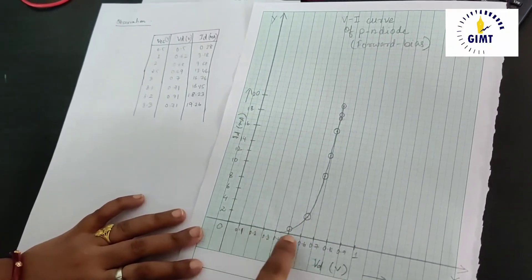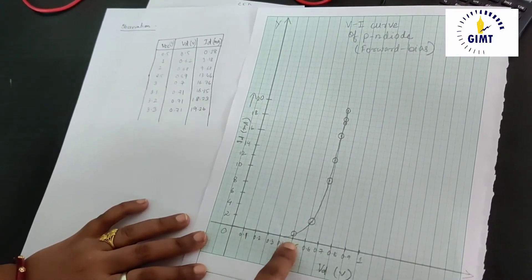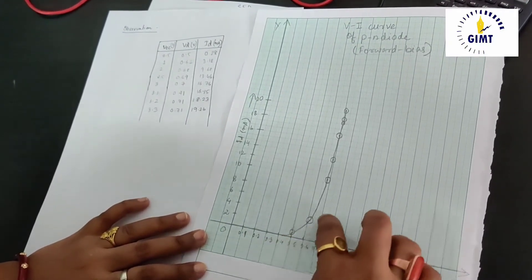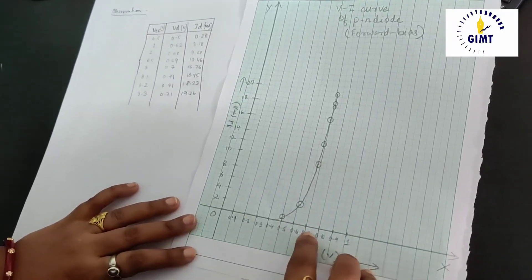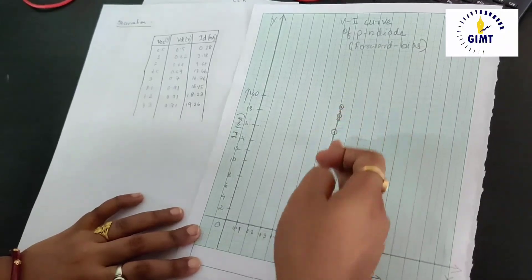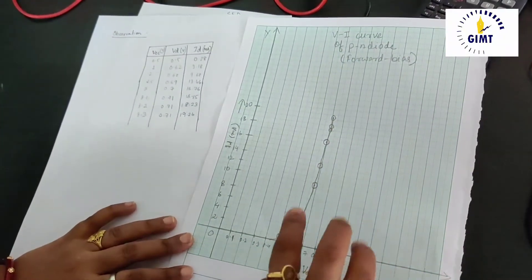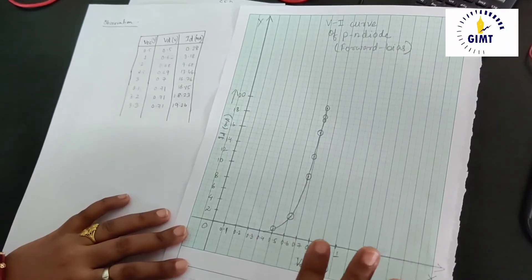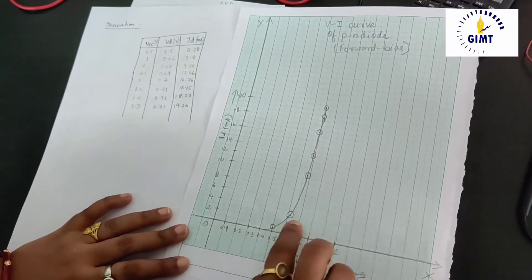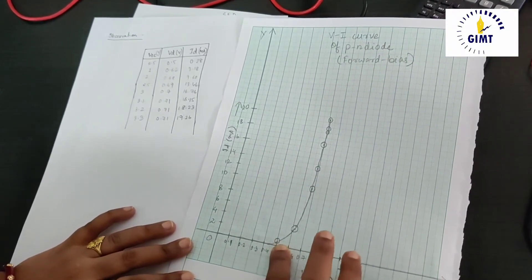We can see that initially, when we are increasing the voltage, the diode current is almost zero. But after a certain point, when the diode voltage is becoming constant at 0.7 volt, there is a steep rise in diode current. Now, we can say that from this particular forward bias Vi curve of a normal diode, that since the current is less here or minimal, the resistance is very, very high.